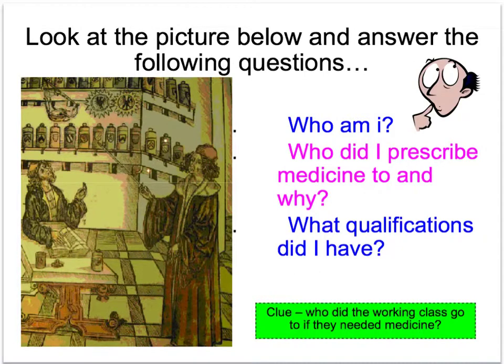Look at the picture below and answer the following questions: Who am I? Who did I prescribe medicine to and why? And what qualifications did I have? As per any question involving a source, always think in terms of what you can initially see for a level one comprehension element, then what you can infer from the information provided for the higher level two inference skill. Please pause.